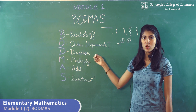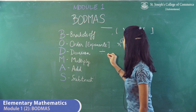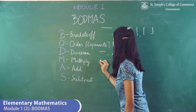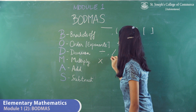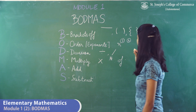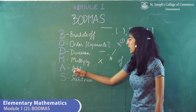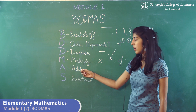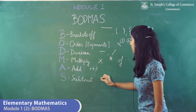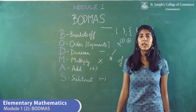D stands for division. The division sign is represented by ÷ or the slash. M stands for multiply. The multiplication sign is represented by x, the asterisk, or the word 'of'. A stands for add. The addition sign can be represented only by the plus sign. S stands for subtraction, which can be represented by the negative sign.